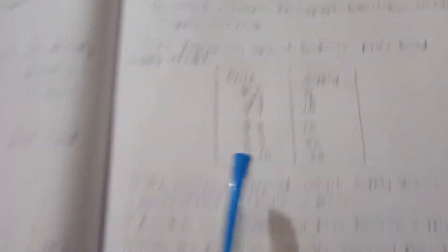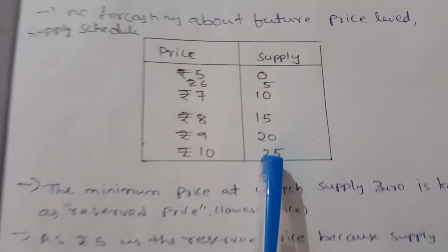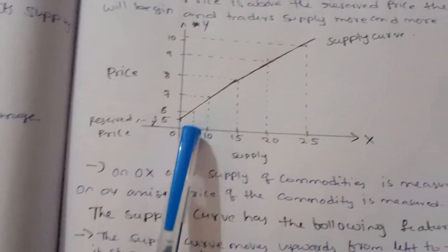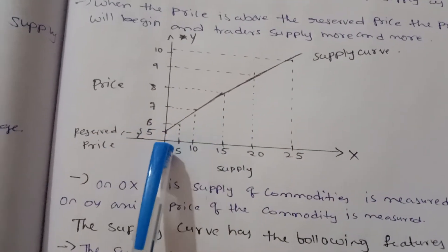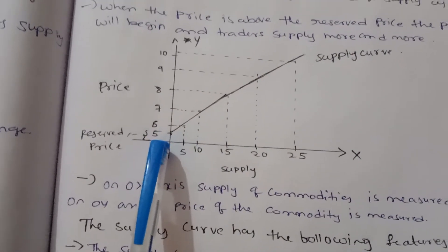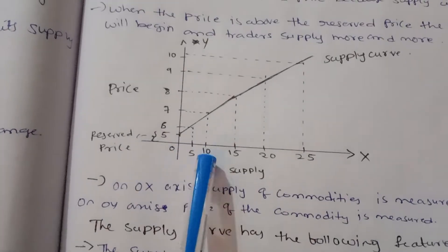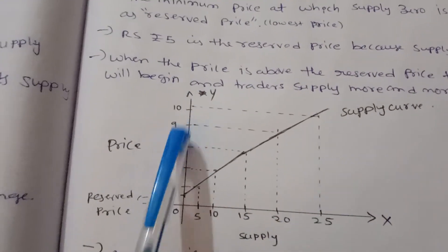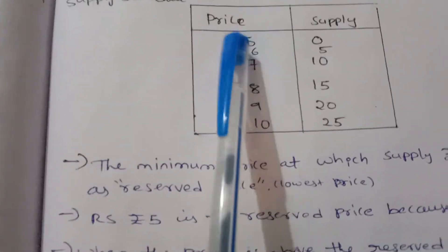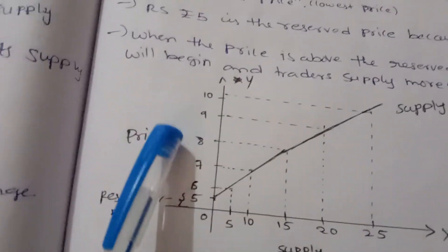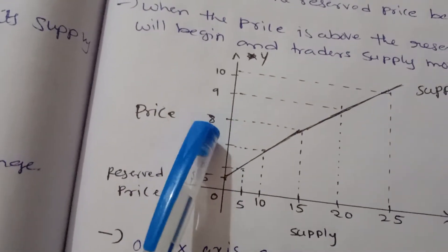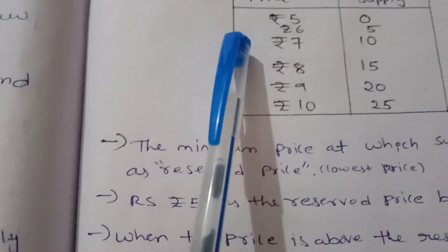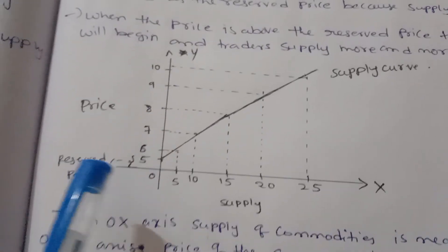Next, price is on the OY axis. OY axis values are 5, 6, 7, 8, 9, 10. Here is price.